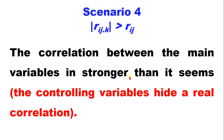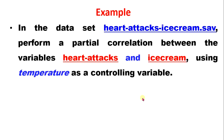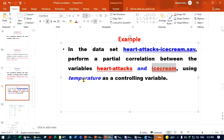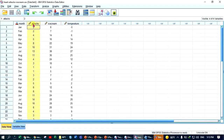Another example: using ice cream and heart attack data, we will perform a partial correlation between the variables heart attack and ice cream, using temperature as the controlling variable. We will run this in SPSS.